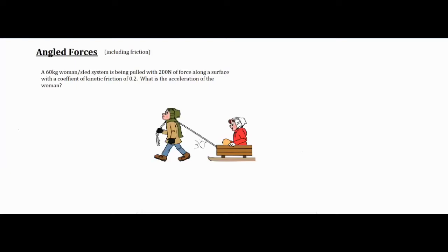In this video we're going to be talking about angled forces. We're going to work out a problem that includes friction. In our diagram we have a person and sled system which is 60 kilograms being pulled with 200 newtons of force along a surface with a coefficient of kinetic friction of 0.2. What is the acceleration of the woman?